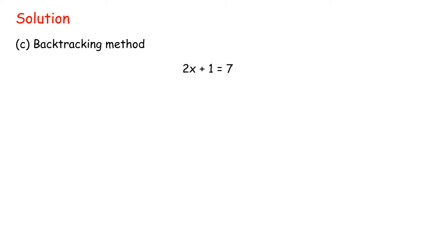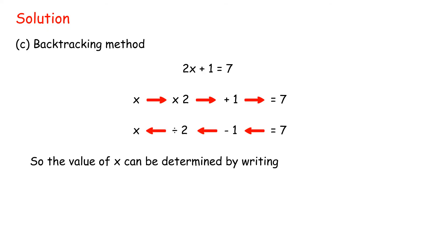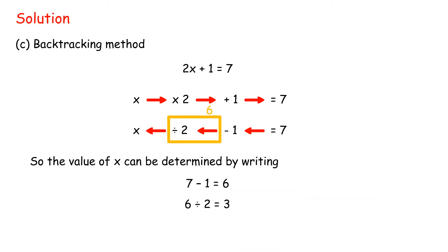Solution (c) Backtracking method for 2x + 1 = 7. Let the initial value equal x and the final value equal 7. List the mathematical operations starting from x to become 7. Using the backtracking method, consider the reverse operations so that 7 becomes the value of x: 7 - 1 = 6, then 6 ÷ 2 = 3. Thus x = 3.